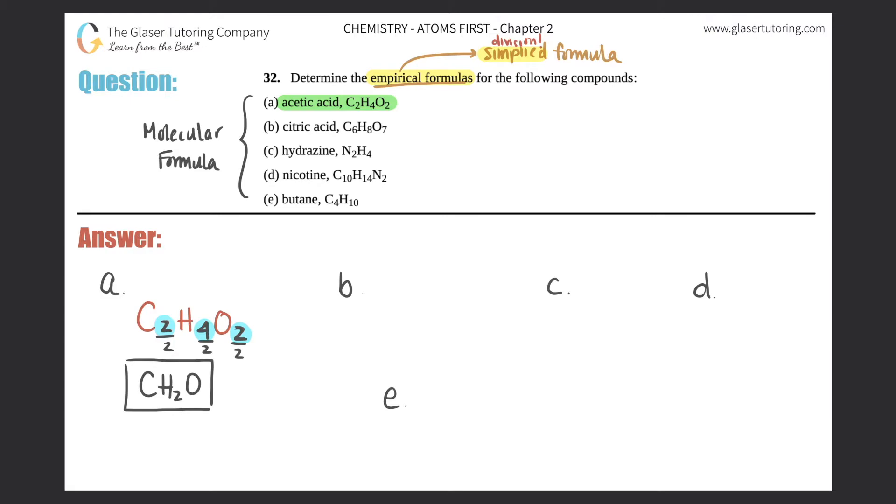Next we got citric acid, C6H8O7. Citric acid is found in fruits and used as a preservative to give baked goods a sour flavor.